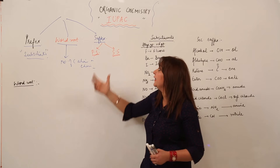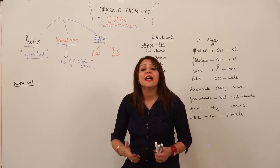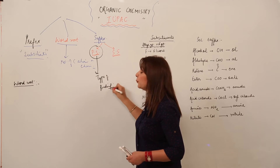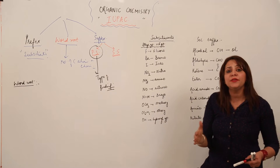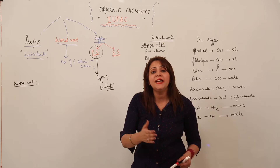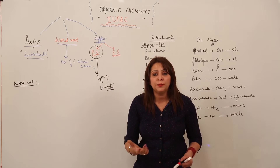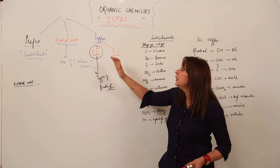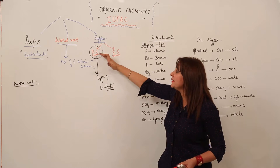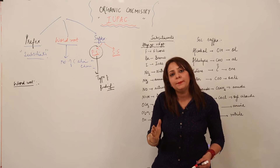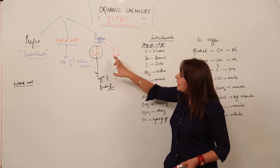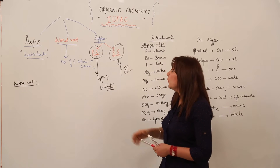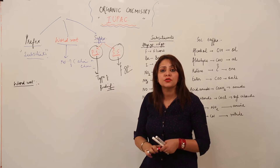The reason for dividing the suffix into two parts is simple. The primary suffix indicates the type of bonding present in the organic compound. As you know, we have alkanes, alkenes, and alkynes. In alkanes there is a single bond, in alkenes there is a double bond, and in alkynes there is a triple bond. The primary suffix indicates whether the bond is single, double, or triple. The secondary suffix indicates the functional group, if present in the compound.